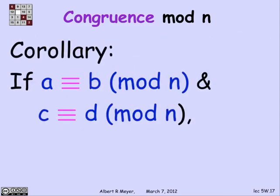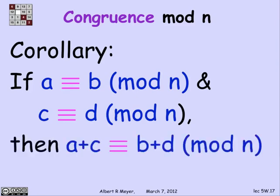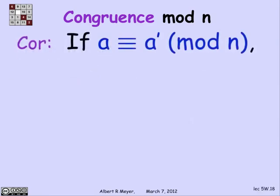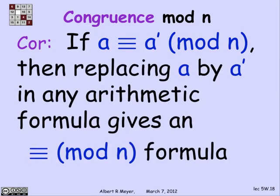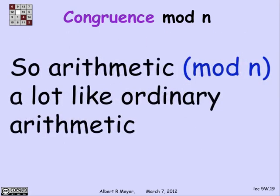More generally, if a is congruent to b and c is congruent to d, then a plus c is congruent to b plus d — congruence acts like ordinary equality: adding equals to equals gives equals. The same applies to multiplication: multiplying equals by equals gives equals. A corollary is that in any arithmetic formula involving plus, times, and minus, you can freely substitute any number by a congruent number and the final congruence result modulo n remains unchanged. Overall, arithmetic modulo n is a lot like ordinary arithmetic.